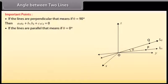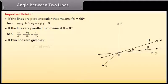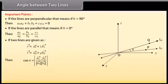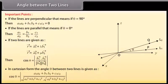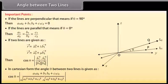Important points: If lines are perpendicular (theta equals 90 degrees), then A1A2 plus B1B2 plus C1C2 equals 0. If lines are parallel (theta equals 0 degrees), then A1 by A2 equals B1 by B2 equals C1 by C2. If two lines are given as vector R equals vector A1 plus lambda vector B1 and vector R equals vector A2 plus mu vector B2, then cos theta equals modulus of (vector B1 dot vector B2) divided by modulus of vector B1 into modulus of vector B2.